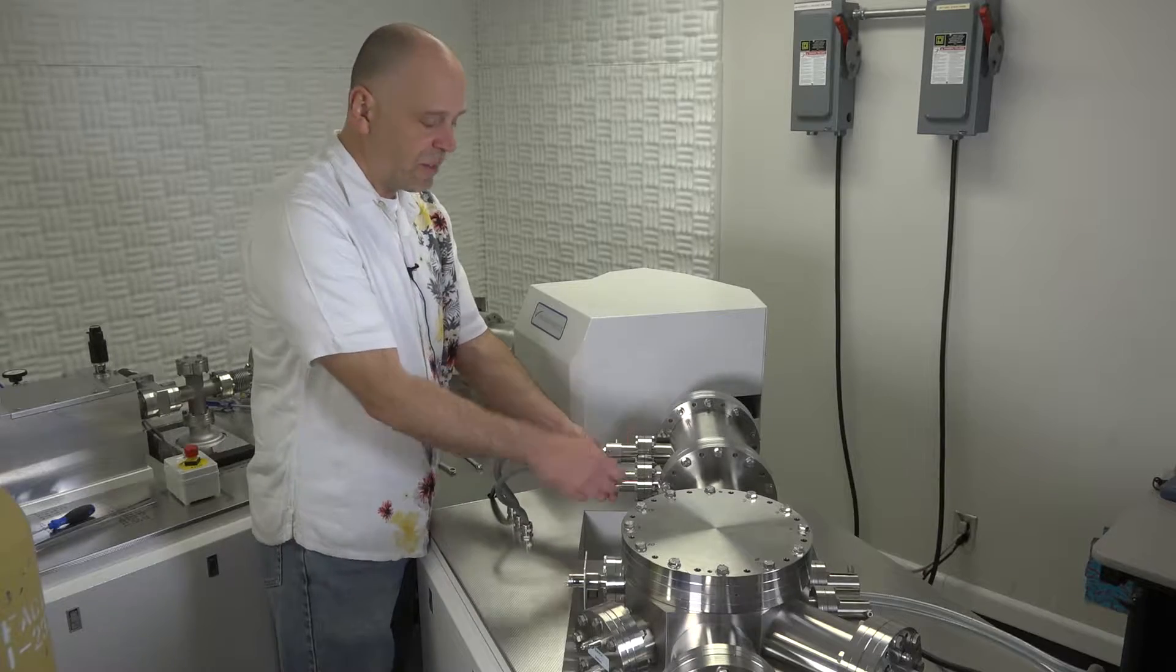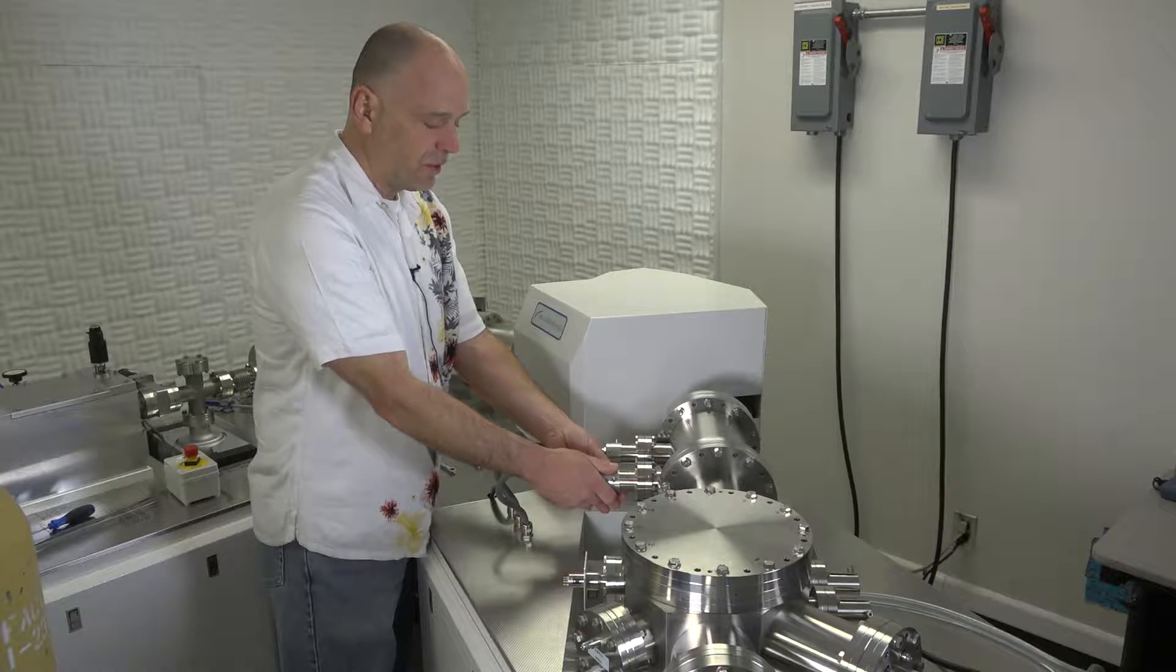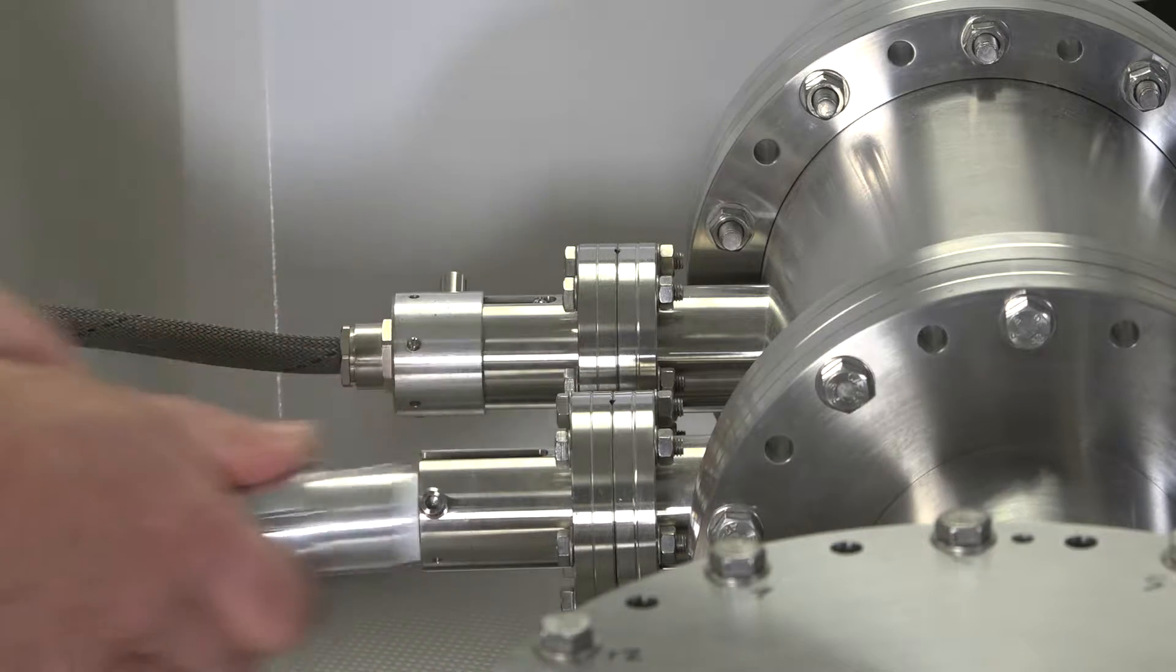The two feed throughs on the quad lenses also need to be removed. You'll do it in the same manner that you removed the previous feed throughs. Undo the set screw, pull them straight out.